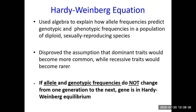Hardy and Weinberg used algebra and high-level mathematics to explain this equation, mainly for sexually reproducing diploid species. They stated that if allele and genotypic frequencies do not change from one generation to the next, that particular gene is in a state of equilibrium. If any change occurs in allele or genotypic frequencies from generation 1 to generation 2, that means evolution is occurring.